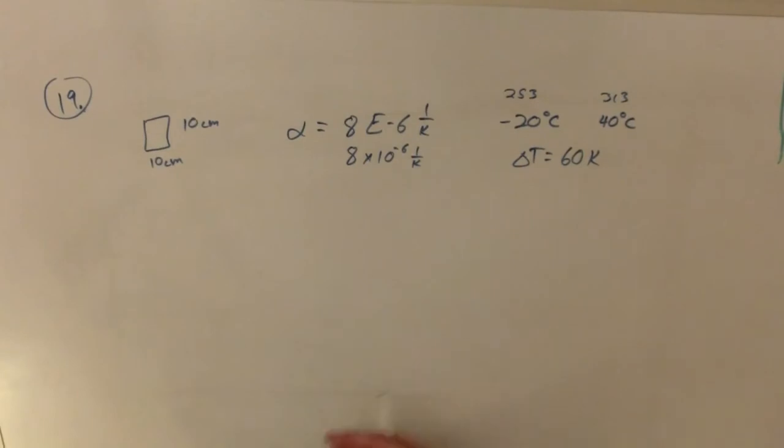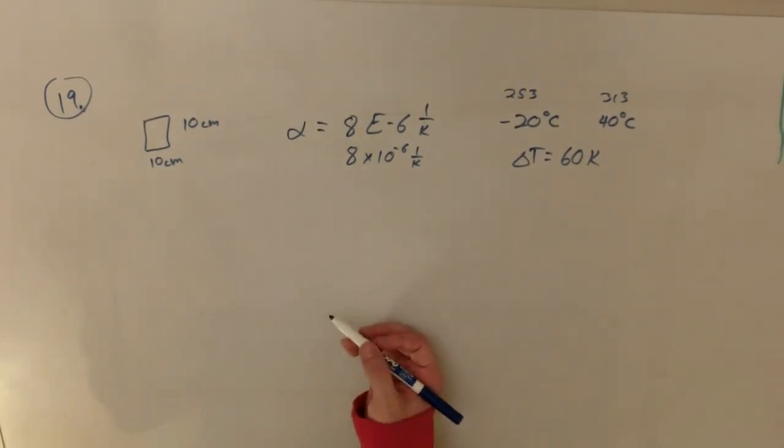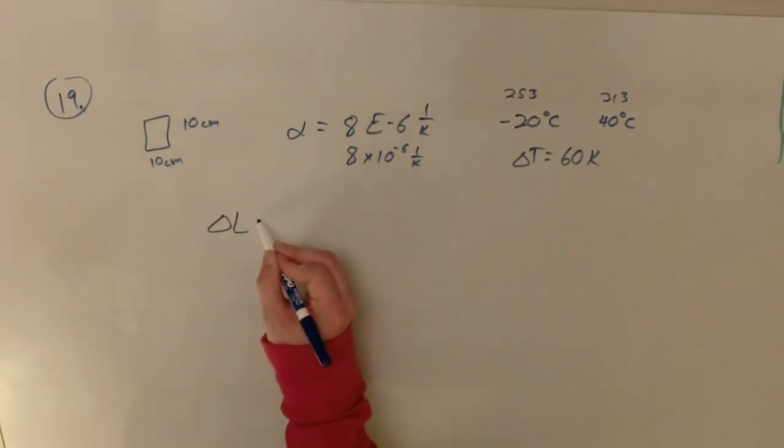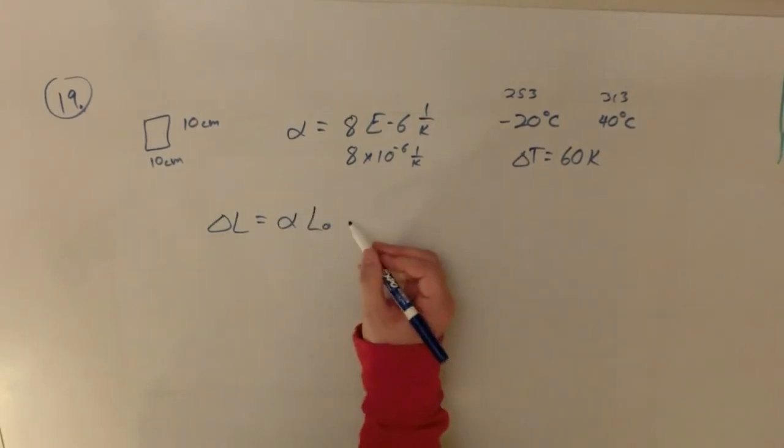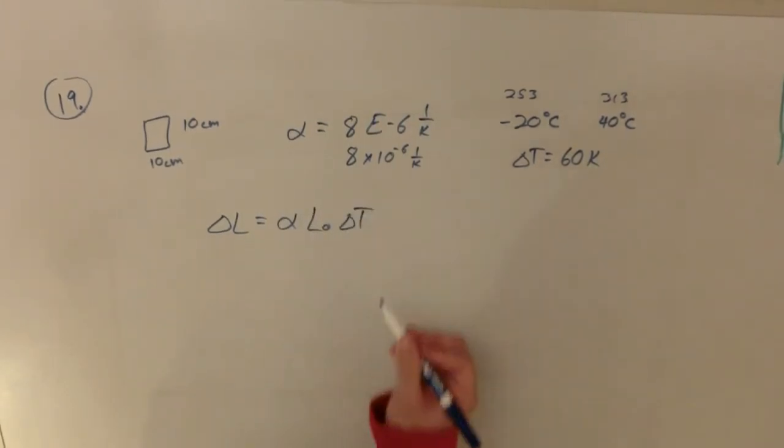All right, so we've got our alpha, we've got our delta T. Our equation looks like this: delta L, our change in length, equals alpha times our original length times delta T.